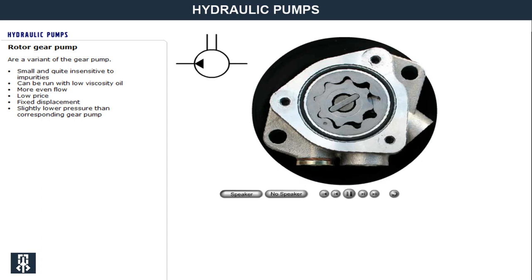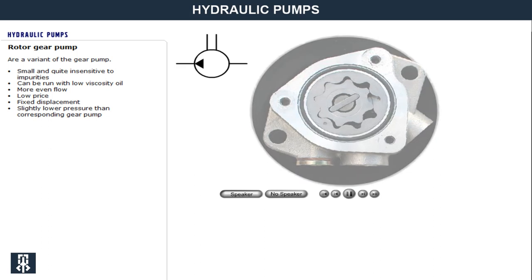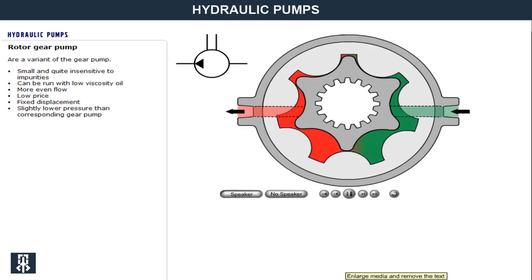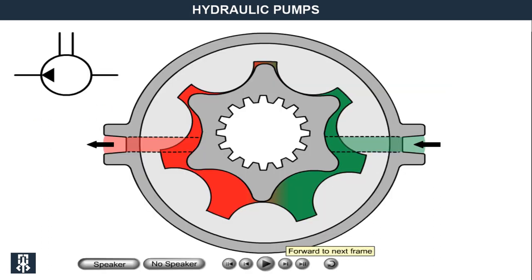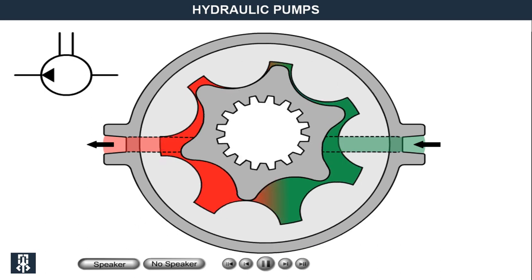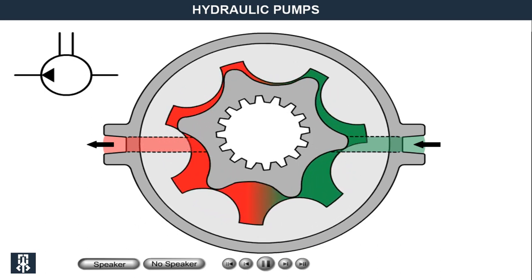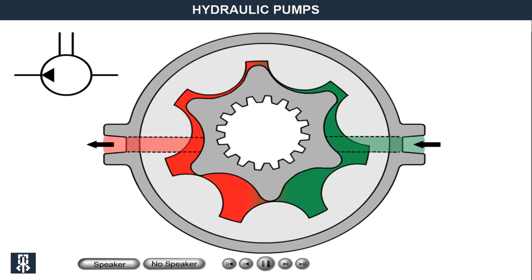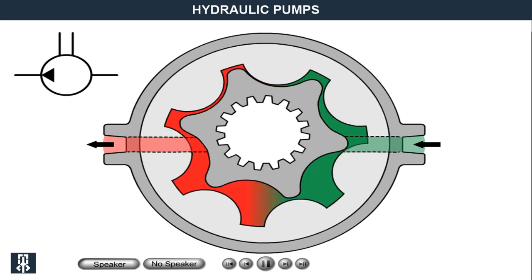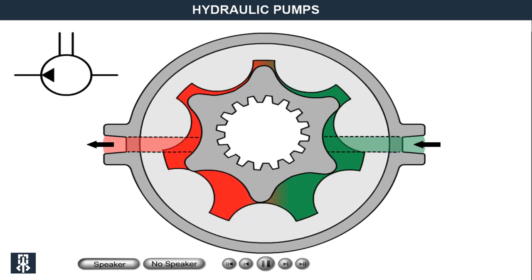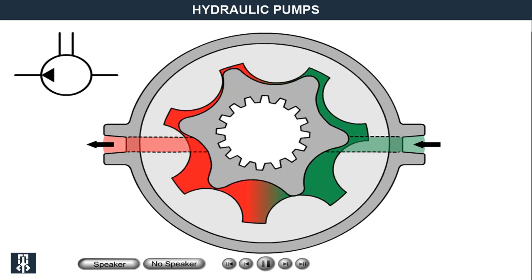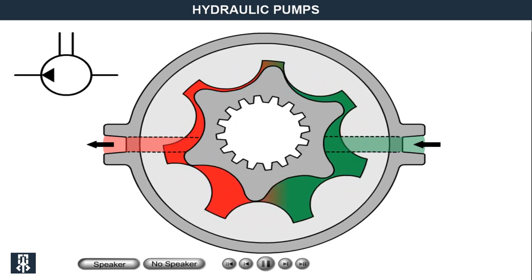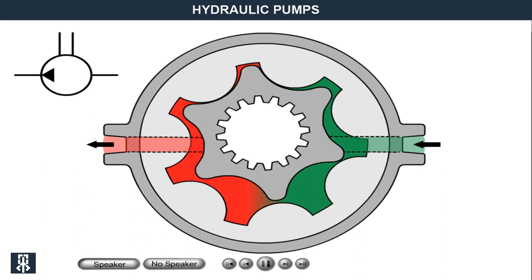For the rotor pump, a variant of the gear pump, the flow's pulsation becomes less distinct. As the rotor in this pump has one tooth less than the internal tooth ring, more than one tooth is never fully engaged with the ring at any one time. Therefore, the oil is not trapped in the same way in the gear engagement as in pumps with gears with outside teeth.